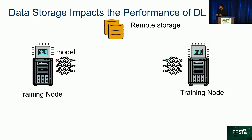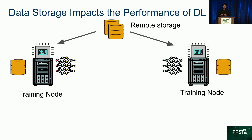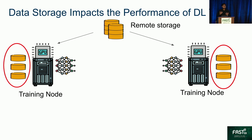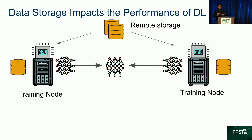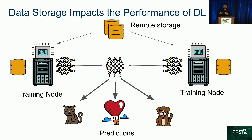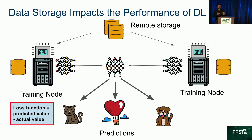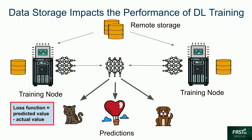What you are seeing here are two distributed training nodes which fetch data from a remote storage. Each training node has a local copy of the deep learning model which is going to be used for training. At the beginning of an epoch, which is one iteration throughout the entire dataset, each node fetches a chunk of the entire dataset. Such chunks are processed in partitions known as mini batches, and the training processes coordinate with one another to update the model.